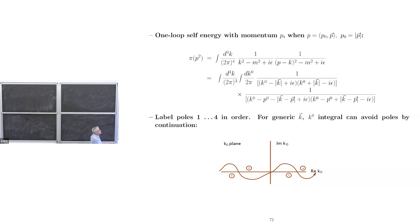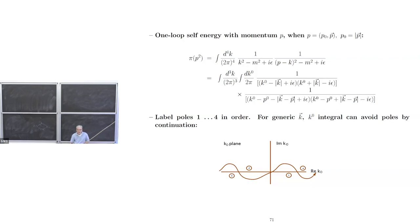This equality is only true for zero mass. So it's K-naught minus K plus i-epsilon, K-naught plus K minus i-epsilon. And then it's K-naught minus P-naught minus the absolute value of K minus P, and then K minus P with a minus. So there are four poles here. If you have N denominators, there are going to be 2N poles. For generic values, the position of the pole is determined by the absolute value of K. P is fixed, so as K-vector varies, these poles move in the complex plane, either slightly above or slightly below the real axis.